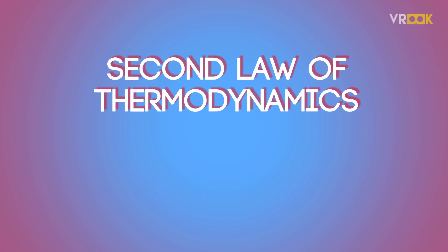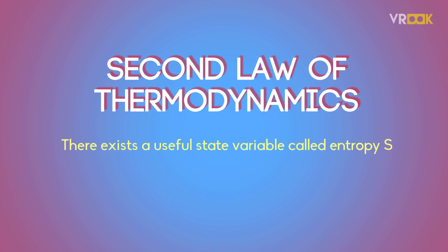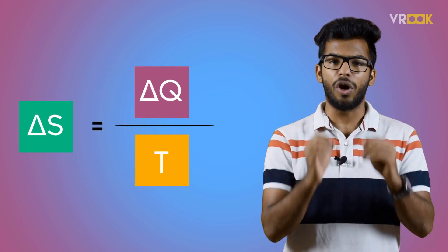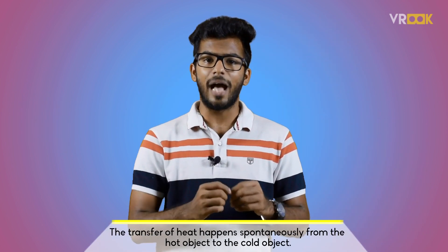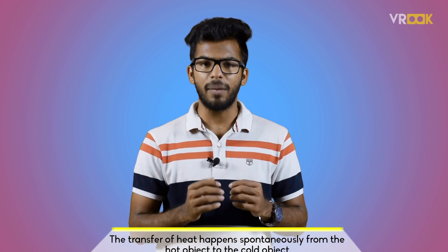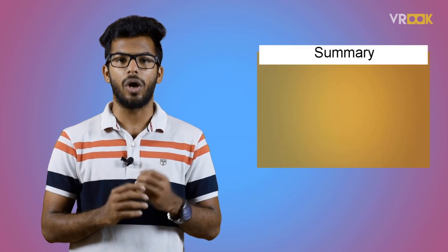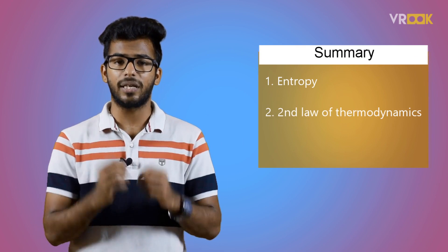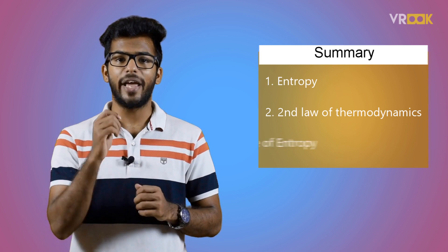Let's recall the second law of thermodynamics. There exists a useful state variable called entropy S. The change in entropy delta S is equal to the heat transfer delta Q divided by the temperature T — delta S equals delta Q over T. More generally, the transfer of heat happens spontaneously from the hot object to the cold object. In this video, we learned about the new state variable entropy, defined the second law which states the way things happen in a particular direction, and also learned why entropy is important.